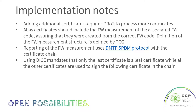Implementation notes should be taken very carefully when implementing DICE. Adding additional certificates requires the platform of trust to process more certificates because of the addition of alias certificates. Alias certificates should include a firmware measurement for the associated firmware code in order to assure that they were created from the correct firmware code. Signing a certificate with a proper firmware measurement provides that testimony.